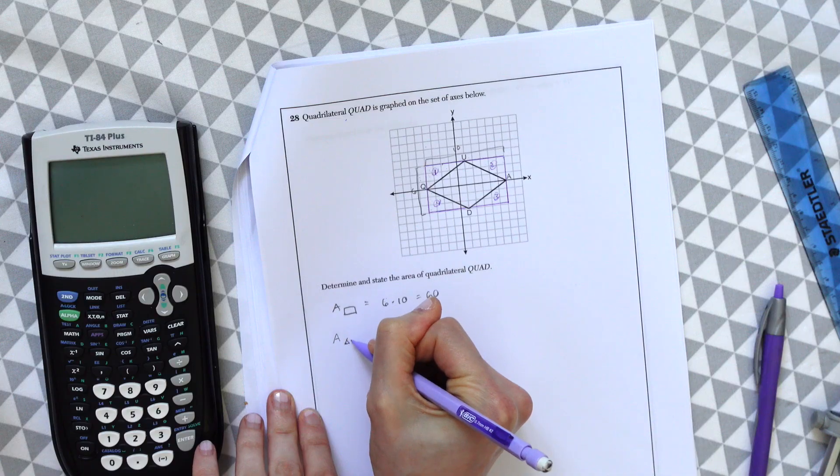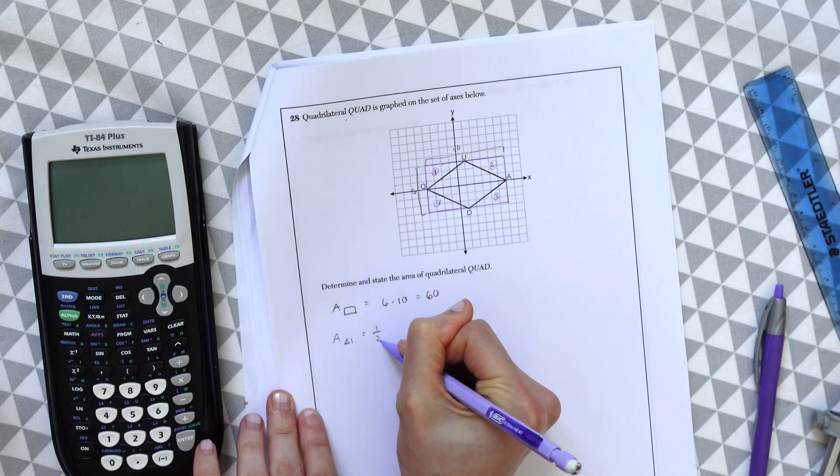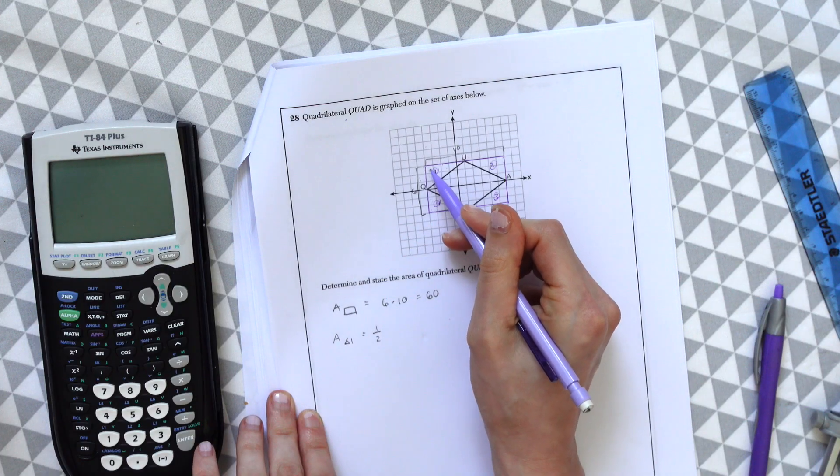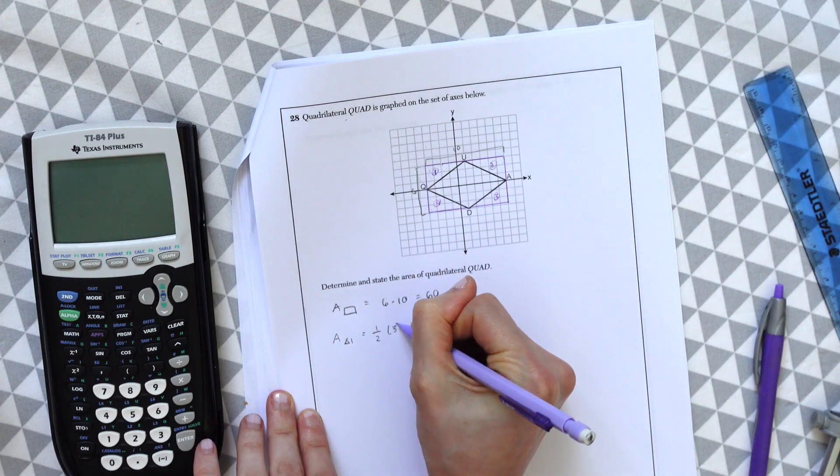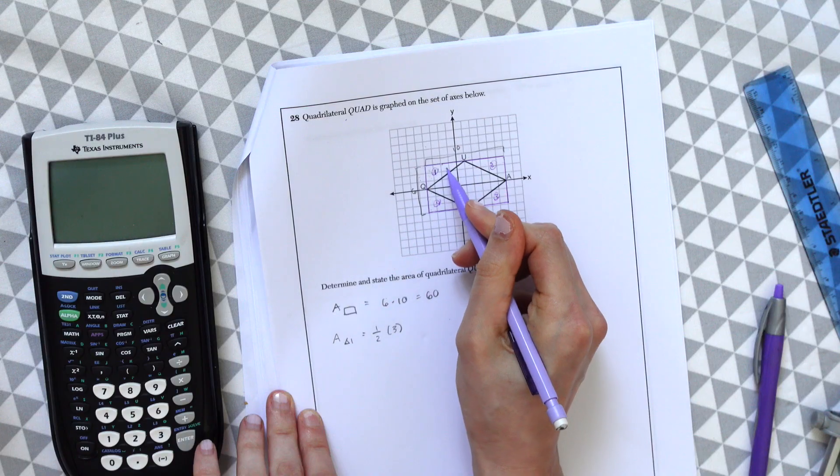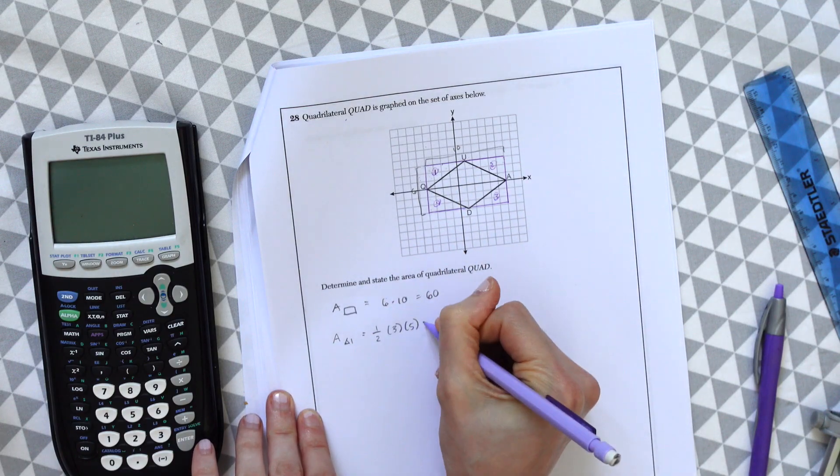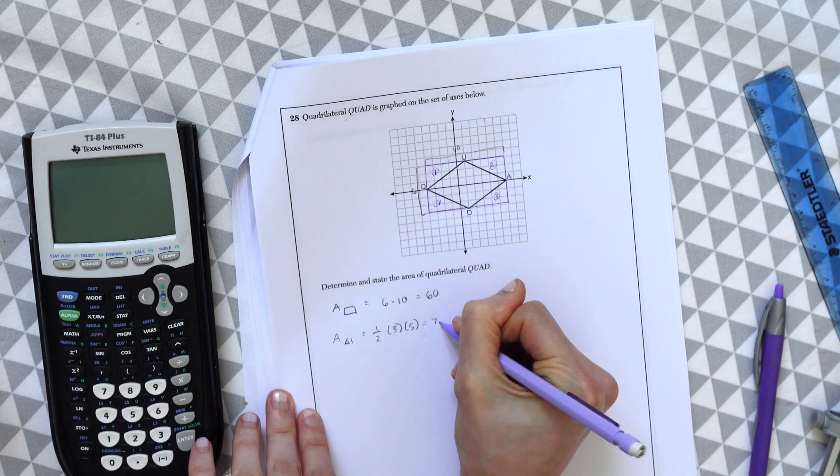And now we're going to find the area of each triangle. So the area of triangle one is equal to one-half base times height. So if you look at the base, you can see this has a value of one, two, three times one, two, three, four, five. So this is 15 divided by two, which will give us 7.5.